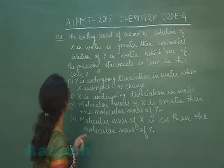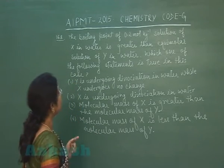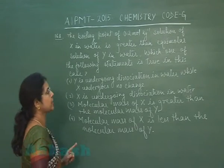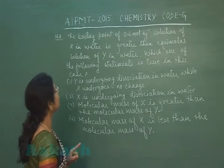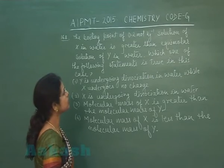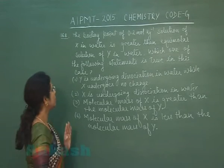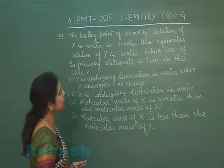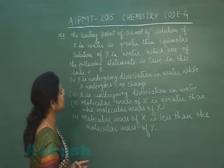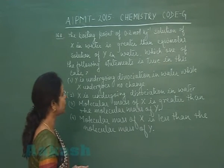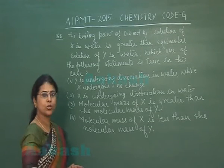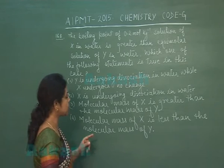Next is question number 168: the boiling point of a 0.2 mol/kg solution of x in water is greater than an equimolar solution of y in water. Options include: y undergoes dissociation while x does not; x undergoes dissociation; molecular mass of x is greater than y; or molecular mass of x is less than y.